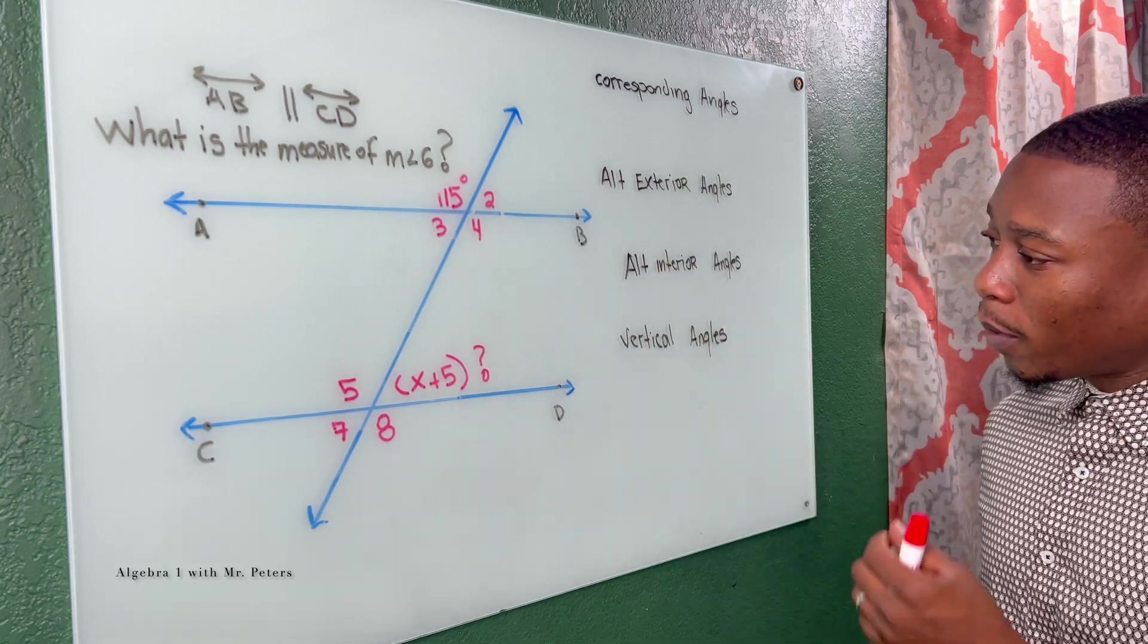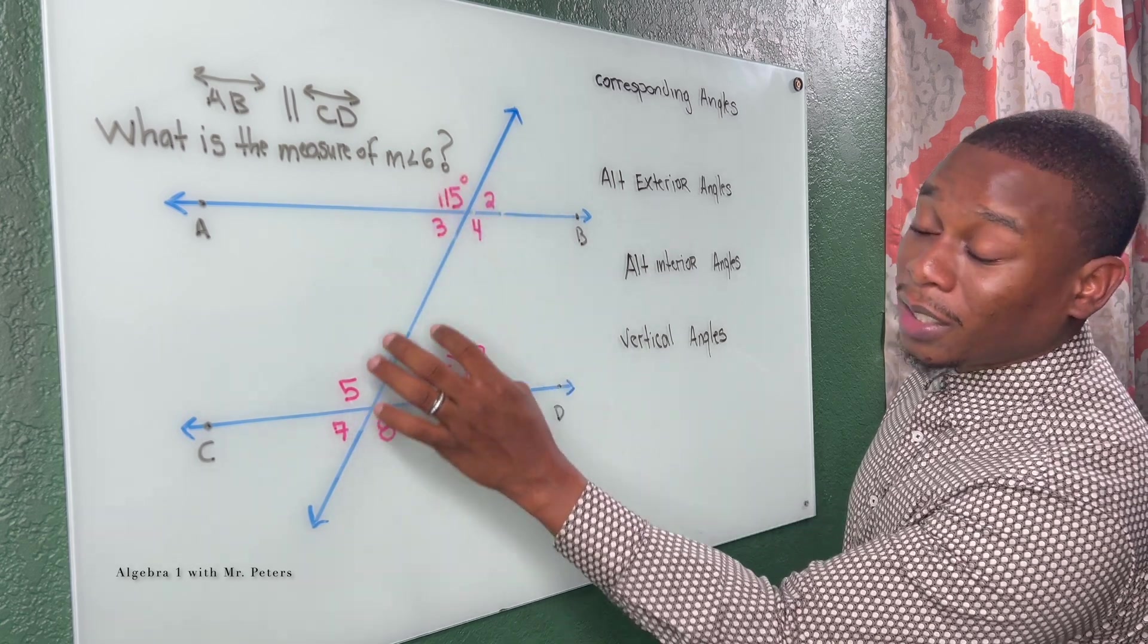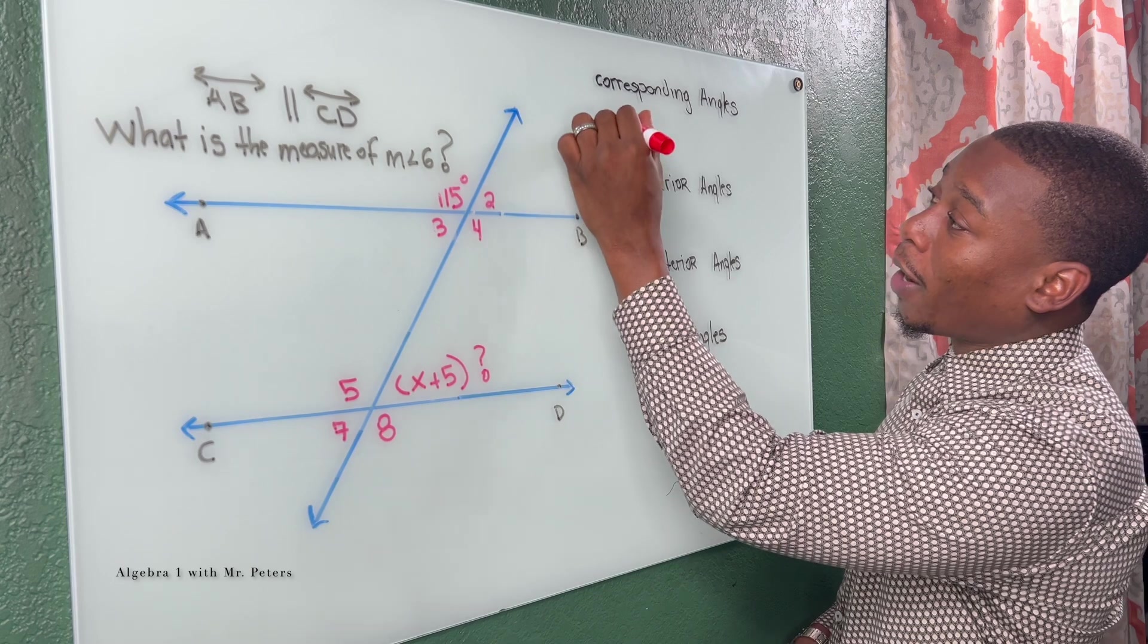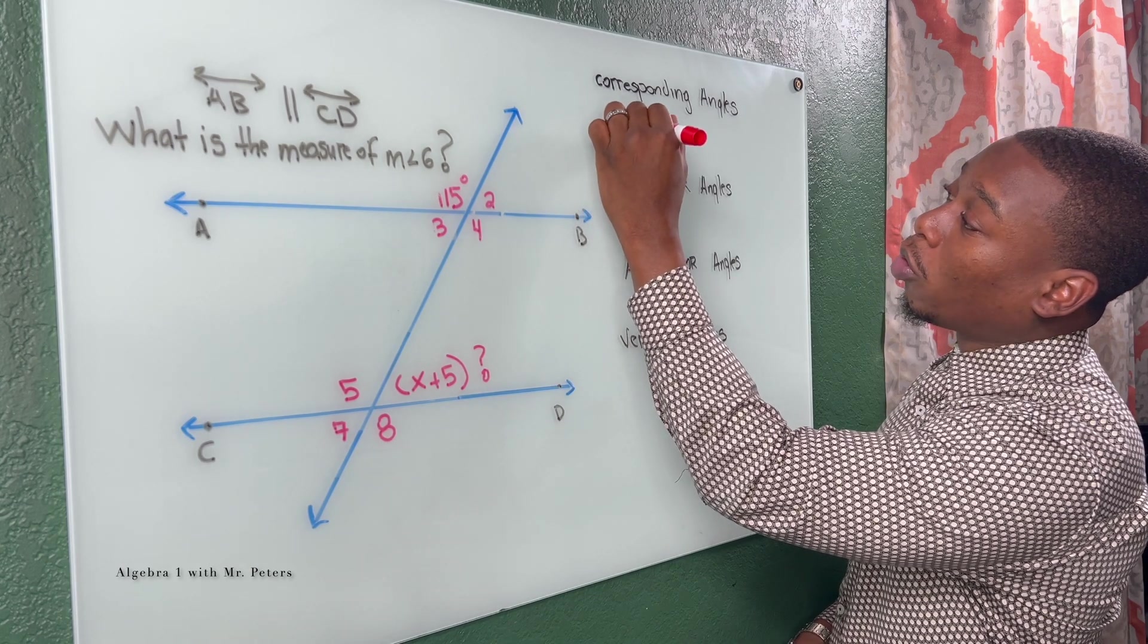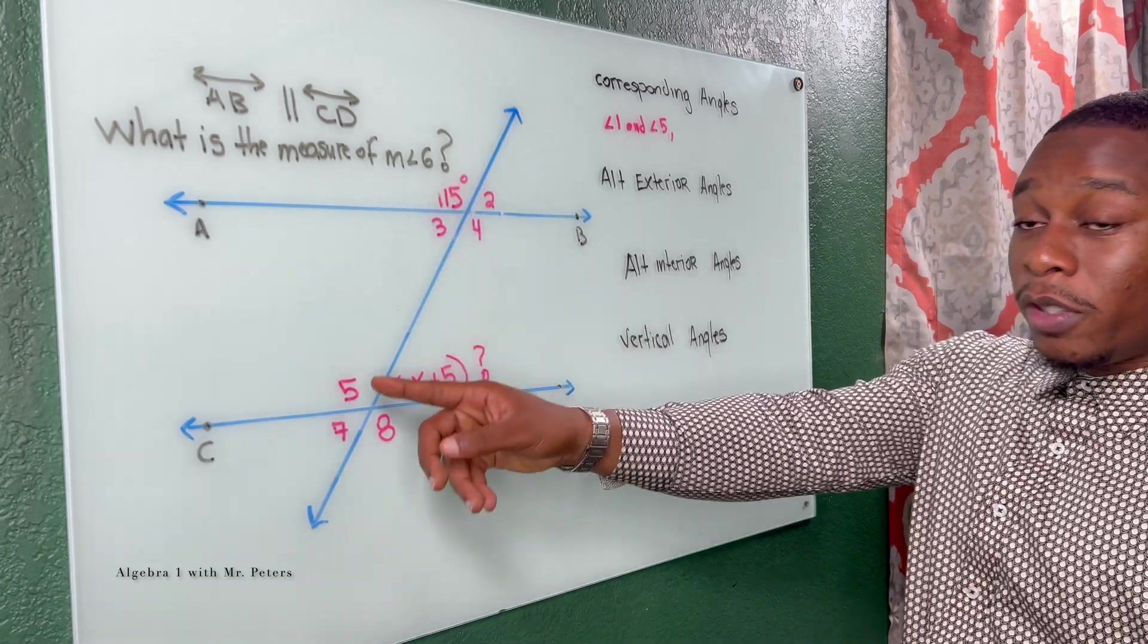So when we go to corresponding angles, we're just saying that these angles are the same based off the position in the intersection. So angle one and angle five, these would be corresponding angles because they're in the same position, top left of the intersection.